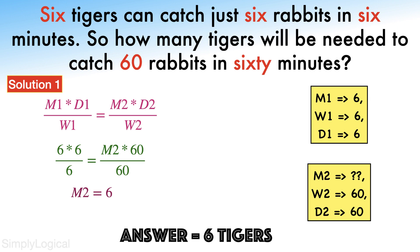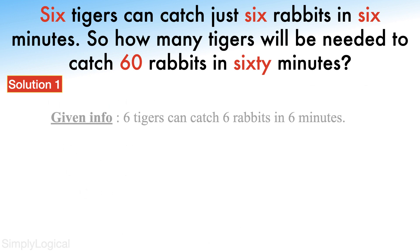So let me explain the other ways to solve this puzzle without using formula. So one way is, the given information as we already know is six tigers can catch six rabbits in six minutes.